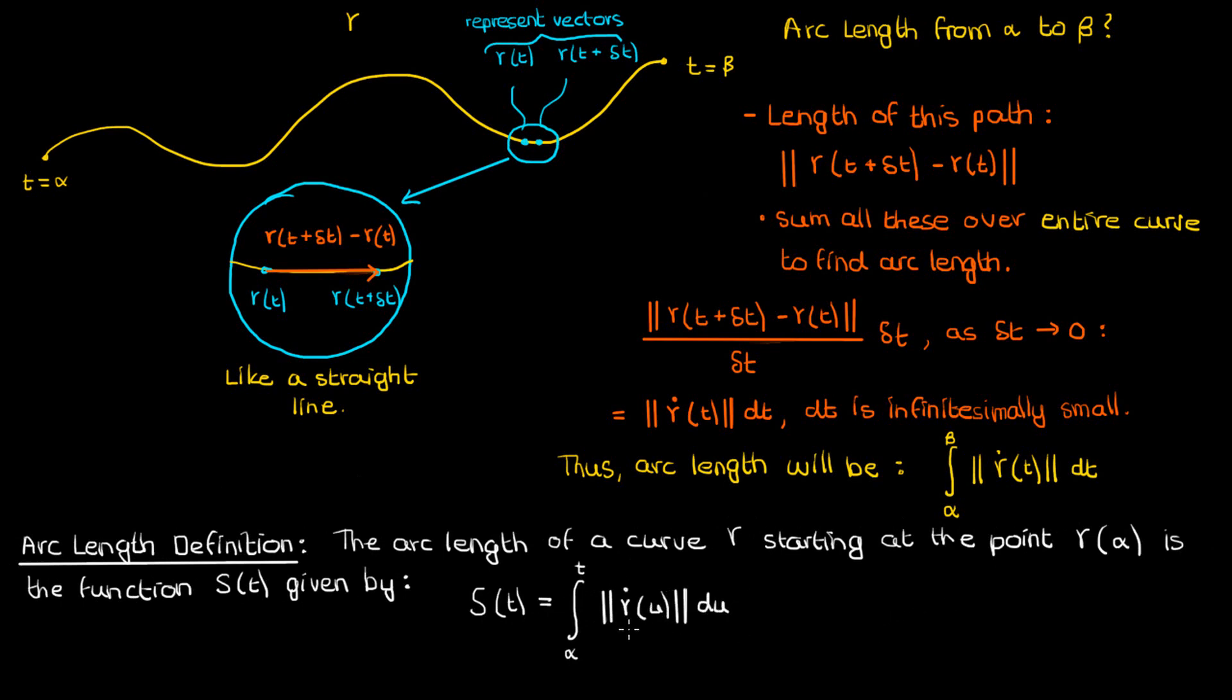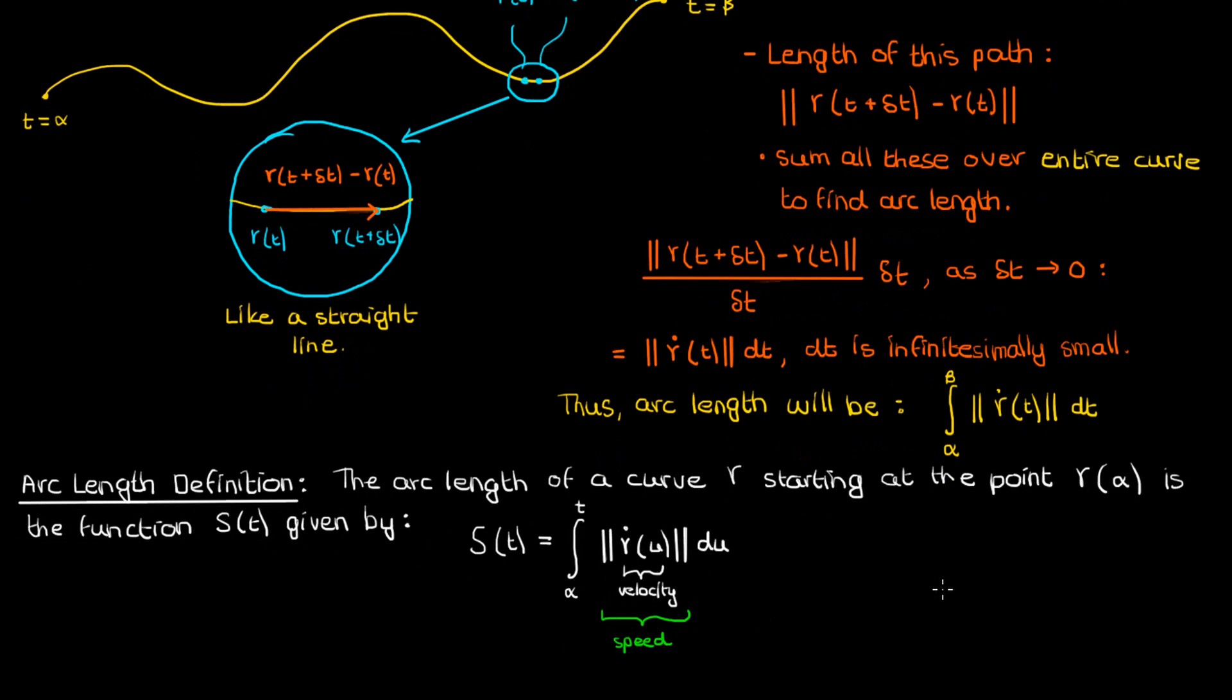This definition should make sense from your basic physics courses. If γ is supposed to represent the path a particle traverses as a function of time, then the derivative of γ with respect to time would be the particle's velocity. And if you integrate the magnitude of that velocity, in other words, if you integrate the speed of the particle with respect to time, you should end up with a distance as your final answer. That's what we get here. Integrating the speed gives us the length of the curve, the length of the path the particle traveled.